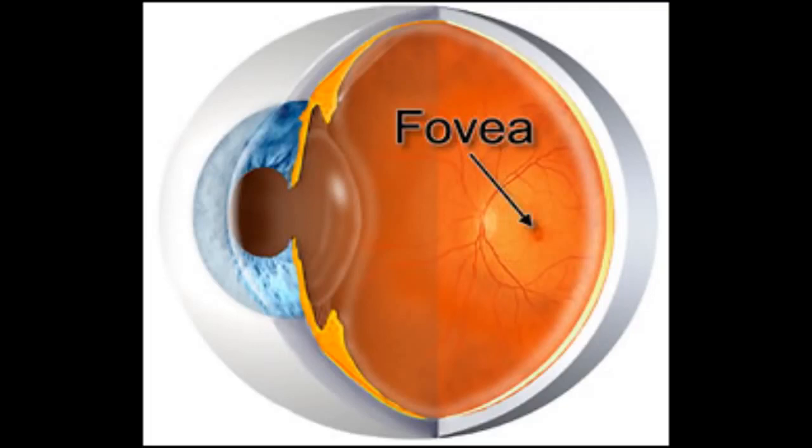At the peripheries where light intensity is lower, are where the rod cells are found. A gradation between the two are seen between the fovea and peripheries.